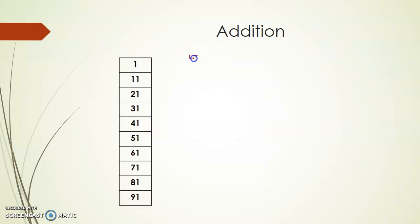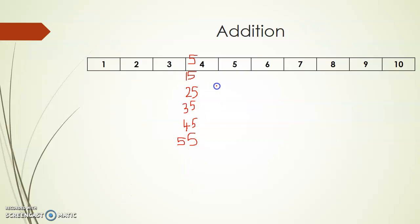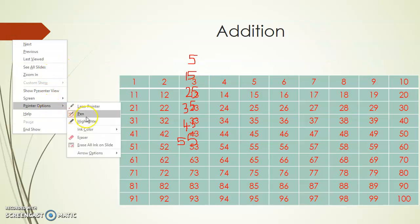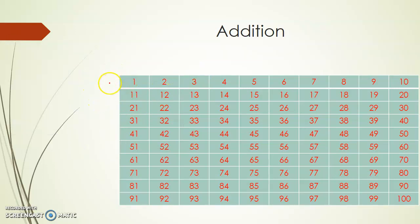So if I start with 5, what will be the next number in the column? 5 plus 10 is 15. What will be the next number? 15 plus 10 is 25, then 35, 45, 55. You can find any number in this column by adding 10 to the previous number. As you move along the row, the next number is obtained by adding 1, and as you move down the column, the next number is obtained by adding 10.